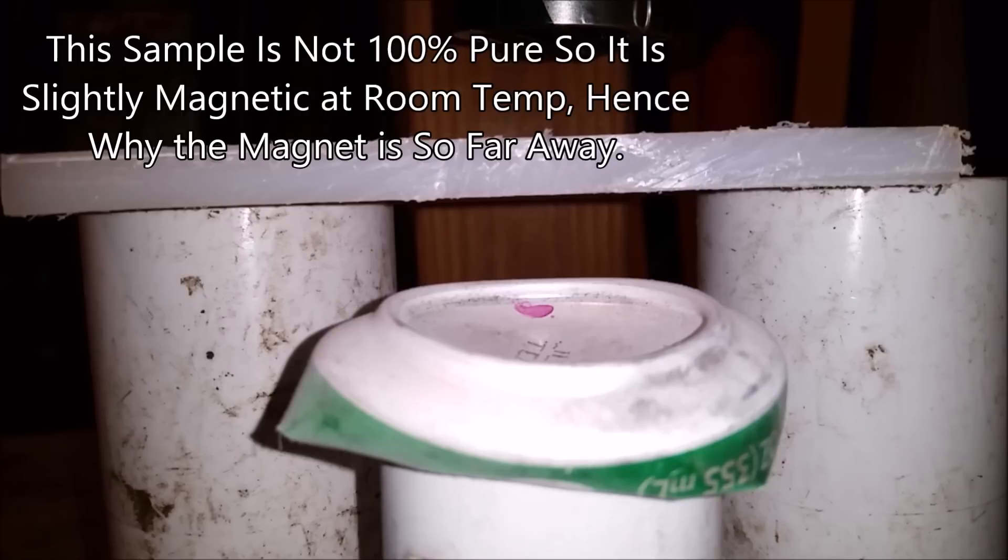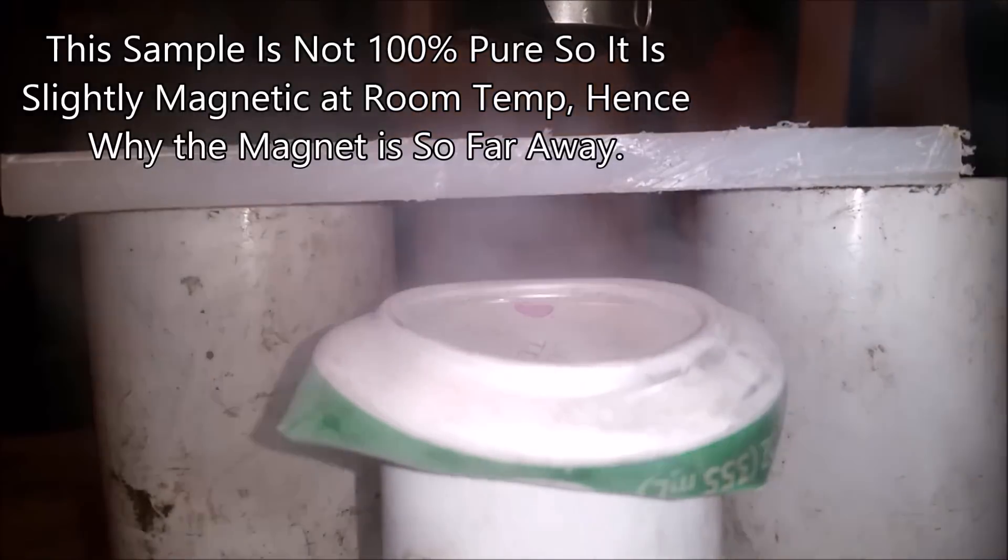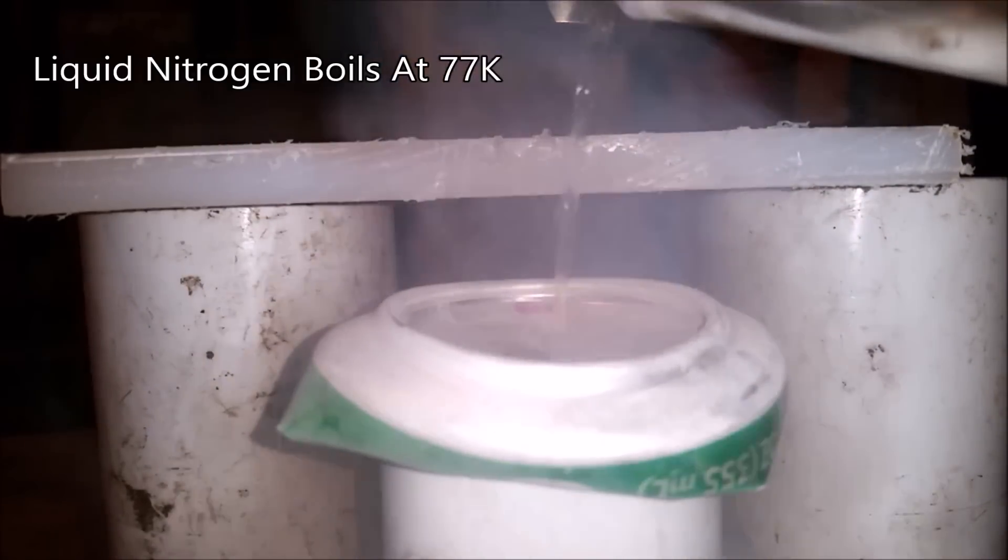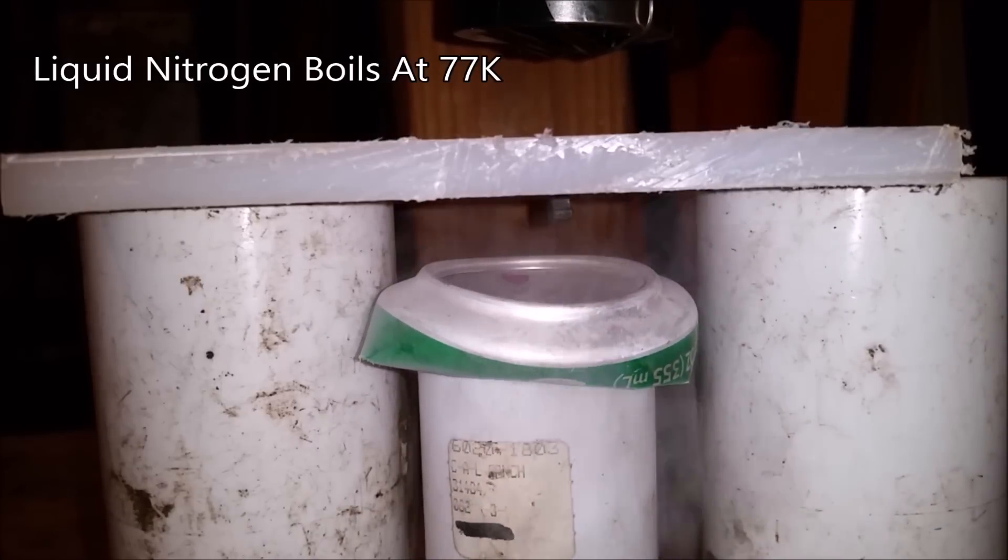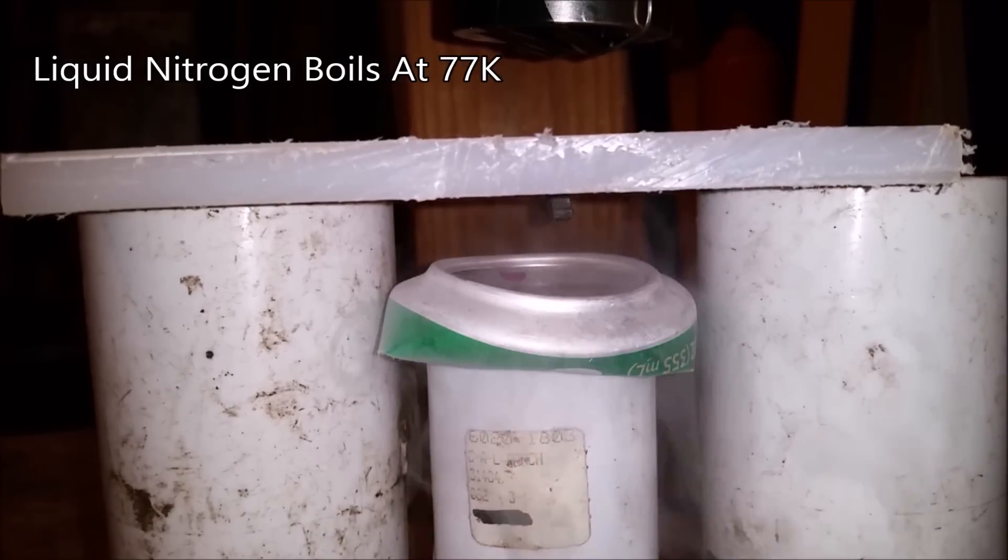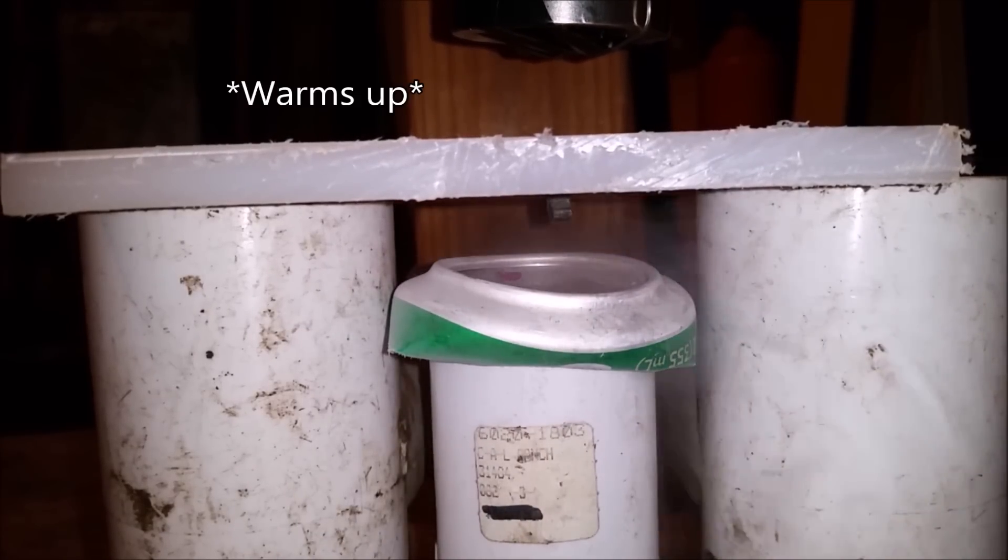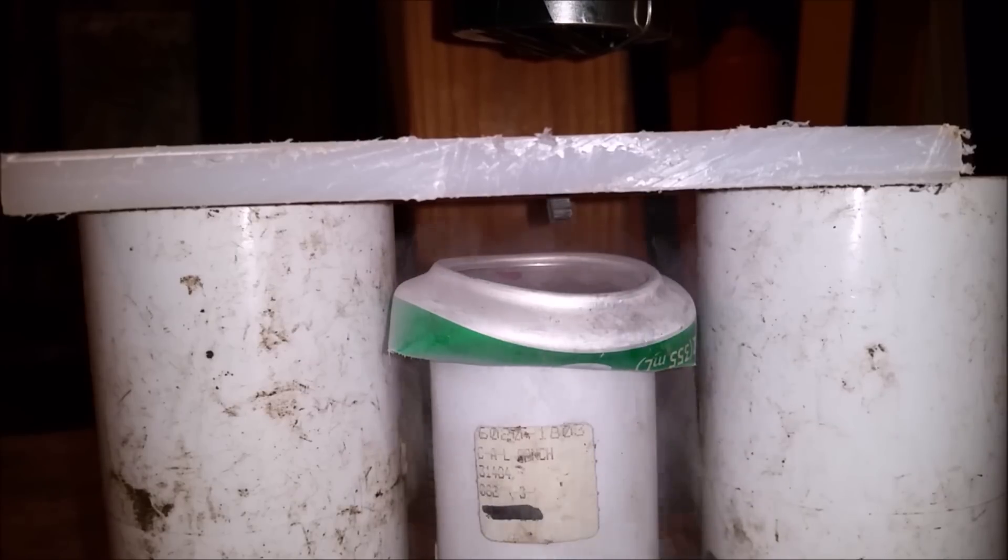If I cool it off to below 88 Kelvin, dysprosium will actually become magnetic. So put that underneath the magnet and as you can see it's stuck right to it. Now once that warms back up, it should drop off of that and fall back into the liquid.